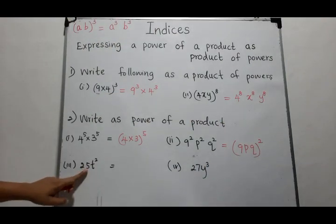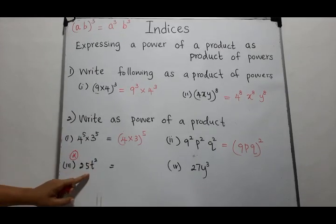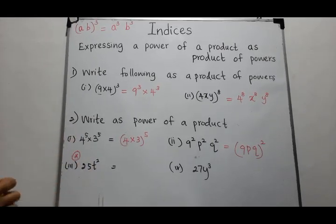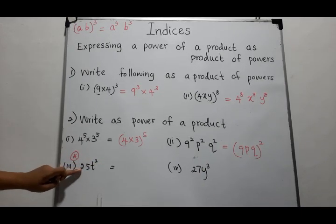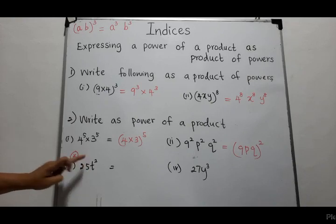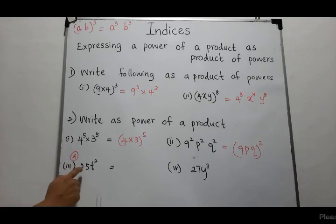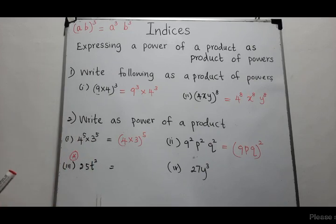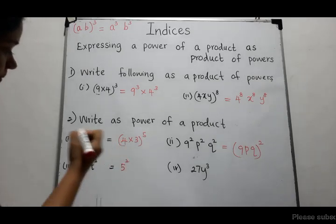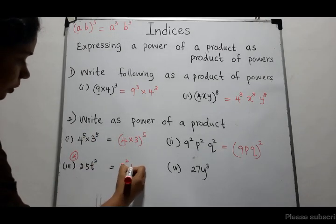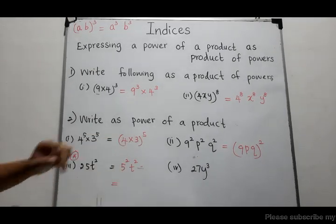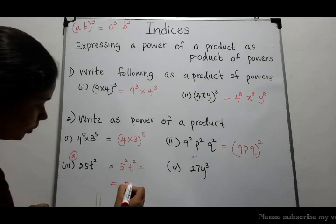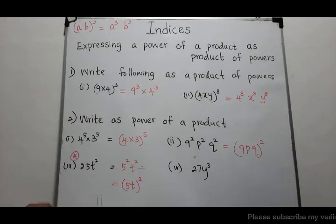Here is a special case: 25t². The index of t is 2, but 25 has an implicit index of 1, not 2. So we have to rewrite 25 with index 2. We know that 25 = 5², so we write 5² · t². Now both indices are 2, so we can write it as (5t) to the power 2.